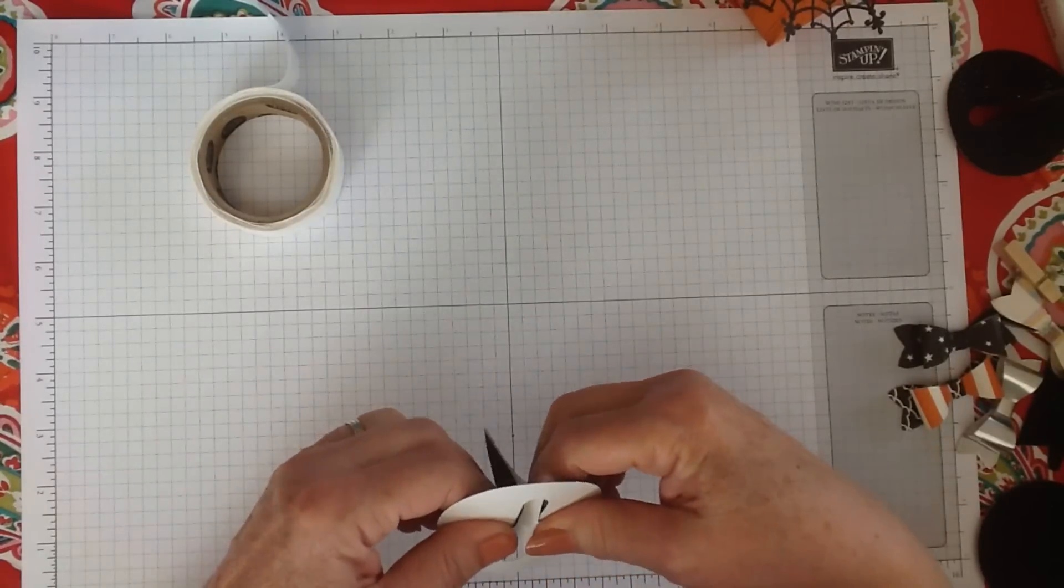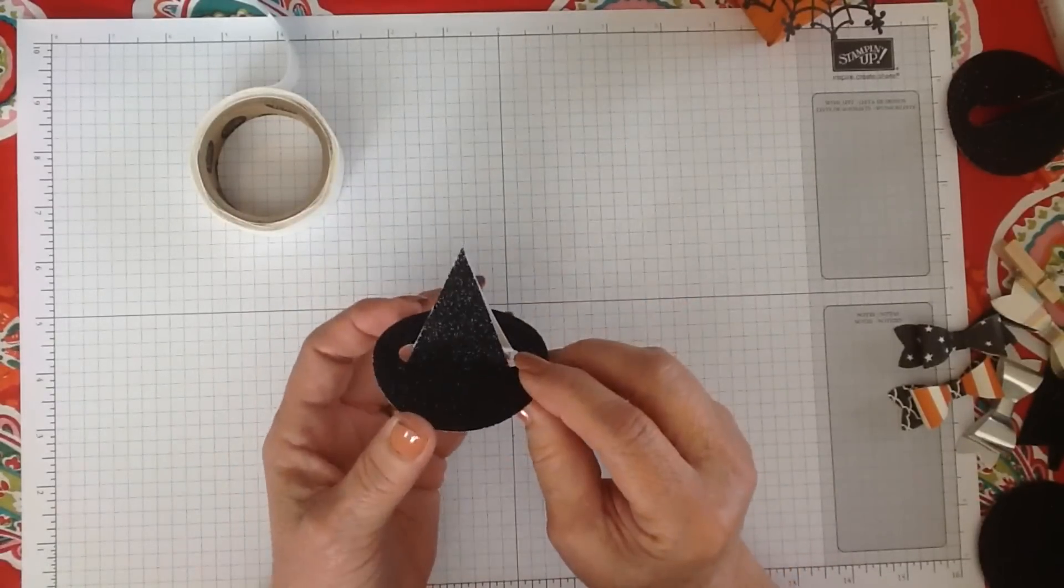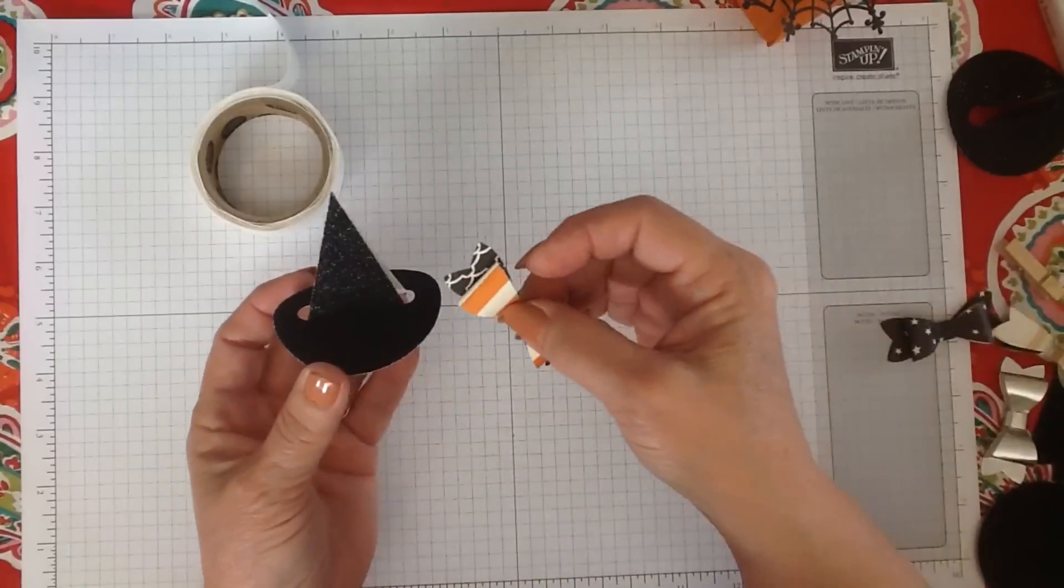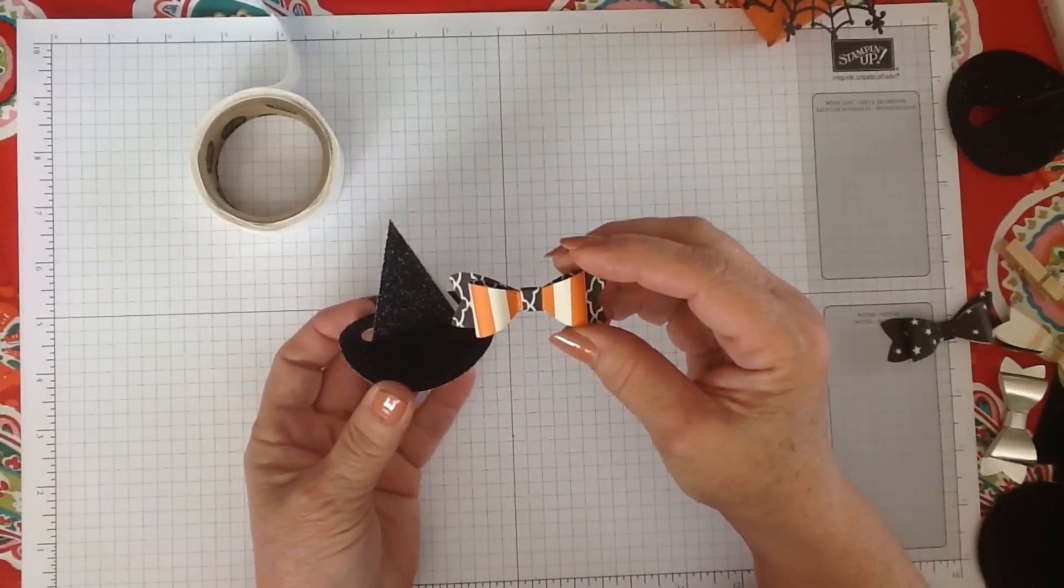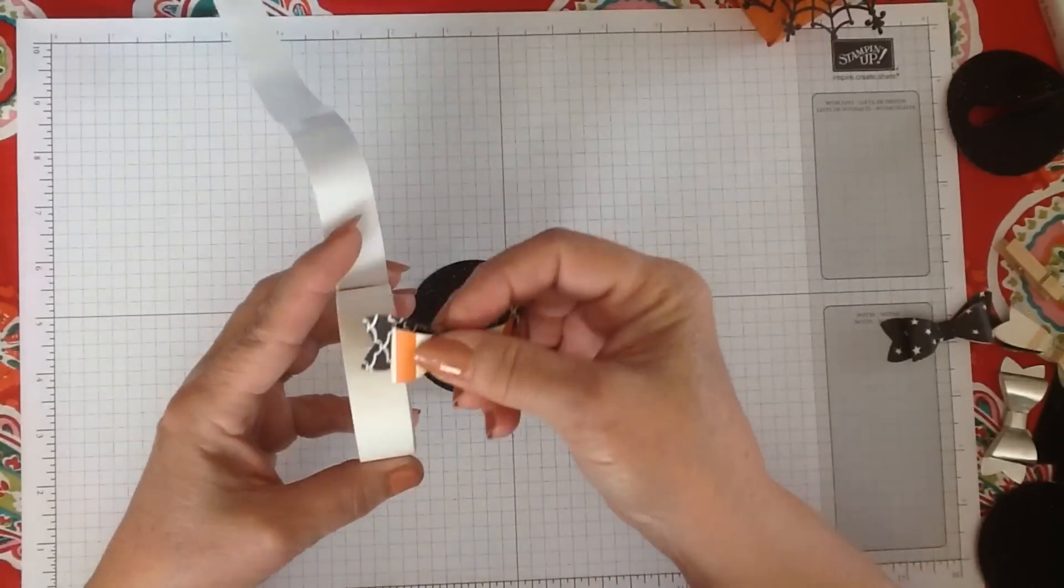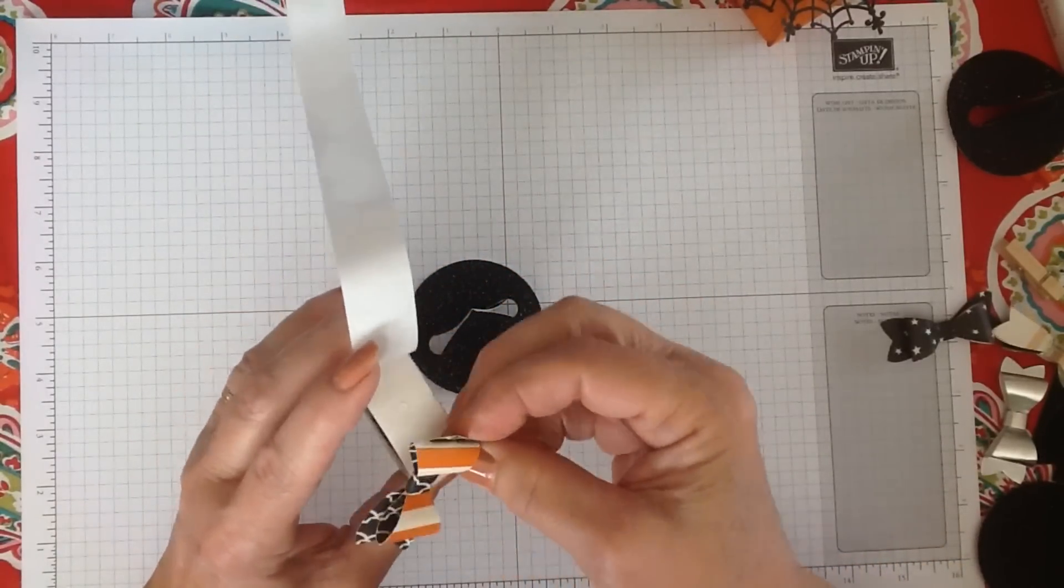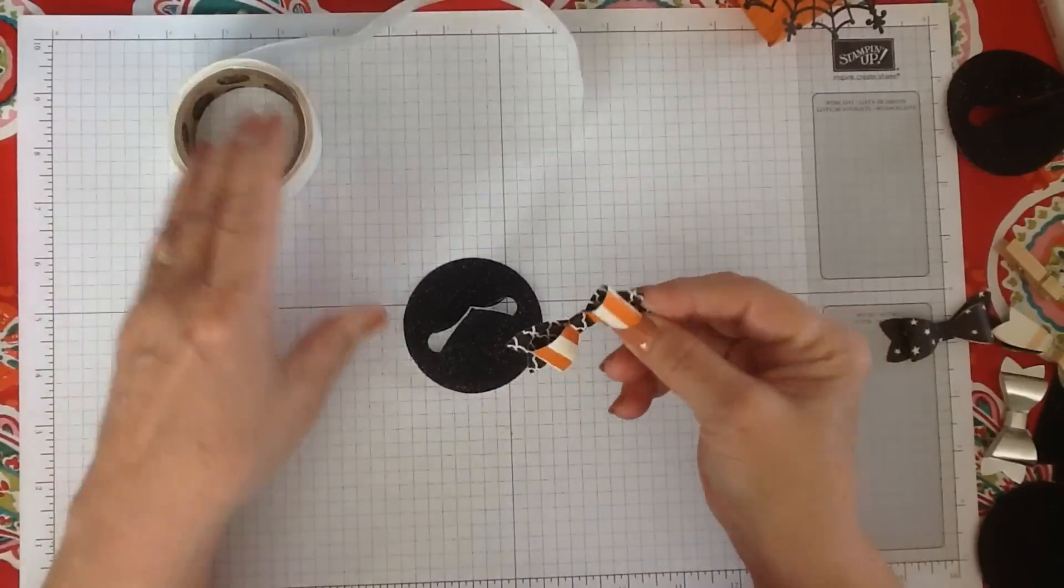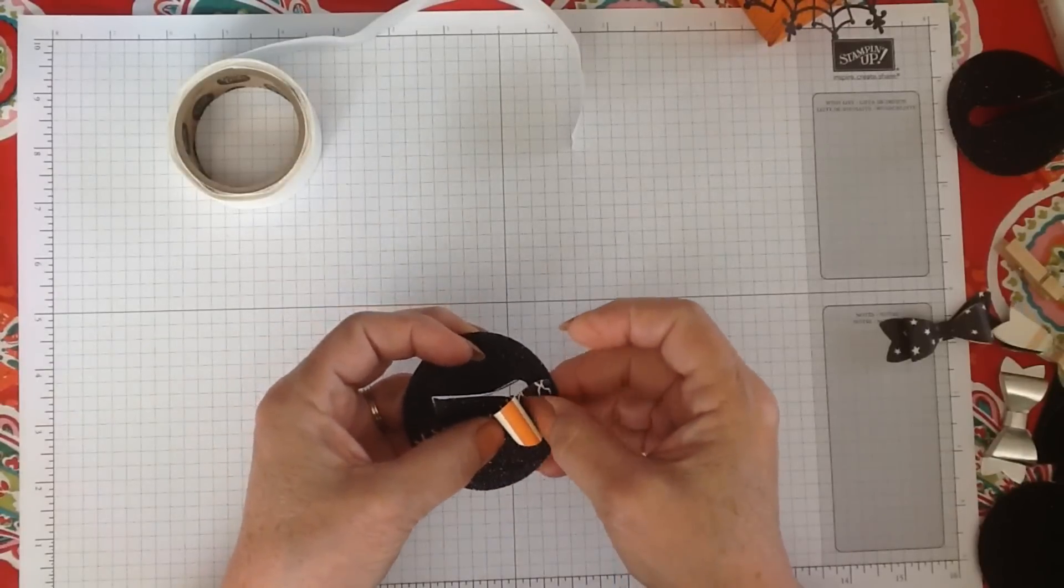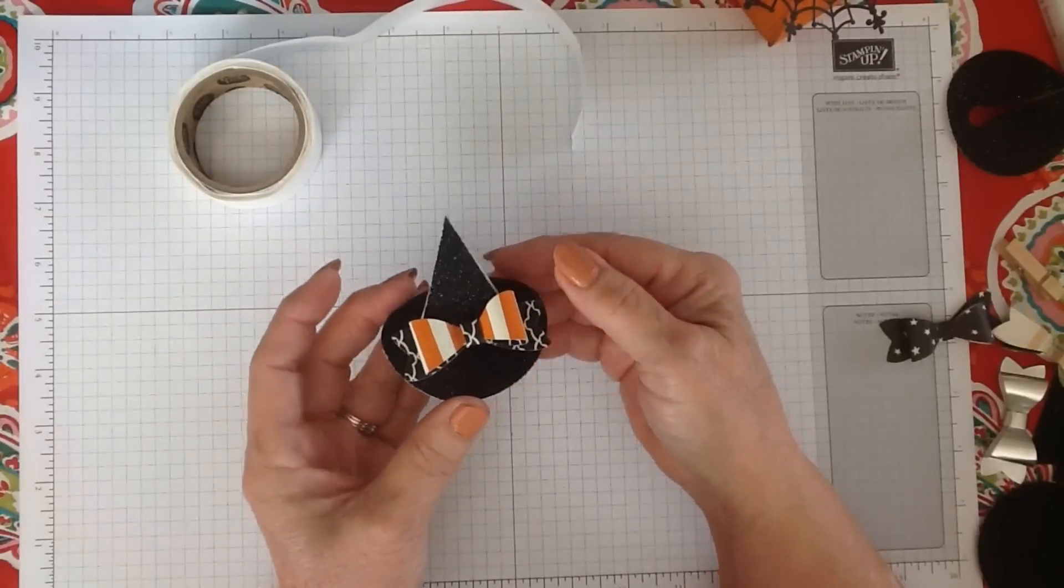So you're just sticking your trees down with the stem. There's your little hat. Then you can make one of our little bows from our little bow punch, stick a couple of glue dots on it, and stick it right on there. Now you've got your little witch's hat.